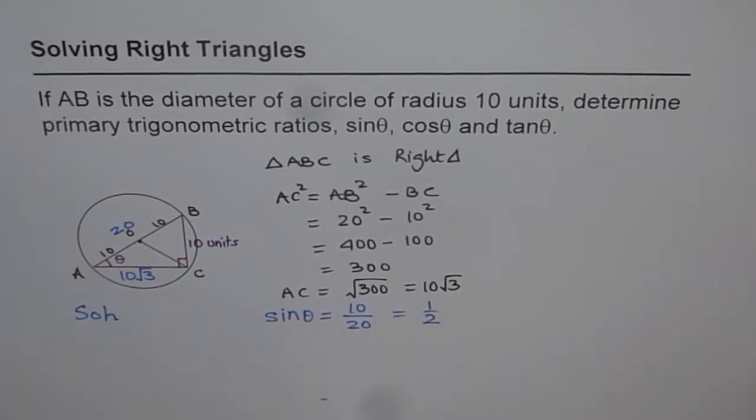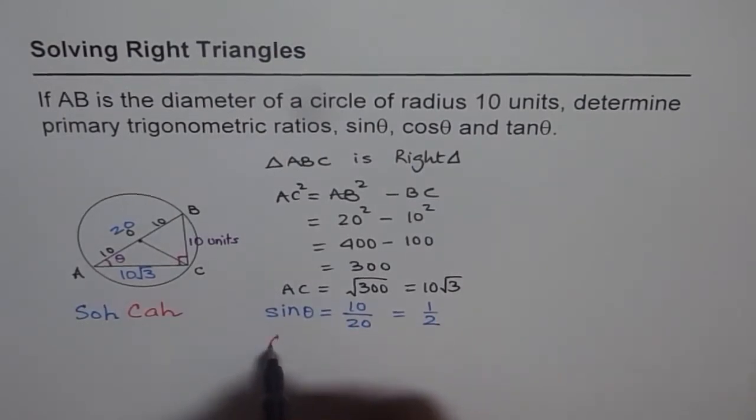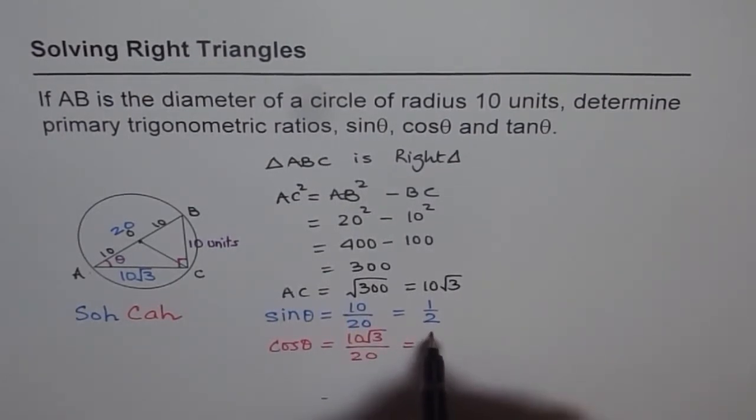Let us try to calculate what is cosine θ. Cosine is adjacent over hypotenuse. So cos θ is equal to adjacent side of 10√3 divided by 20. That gives us √3/2.